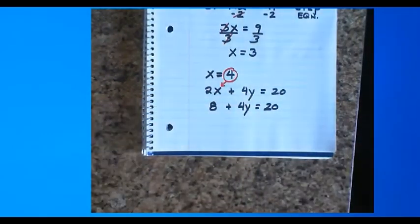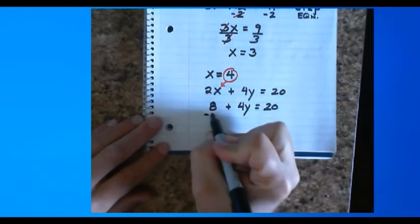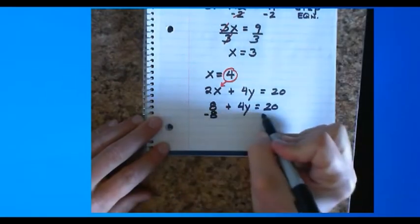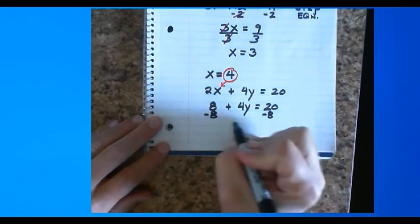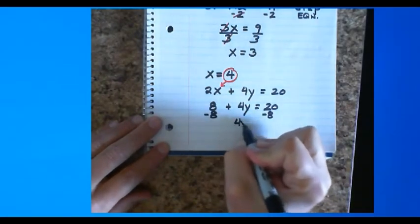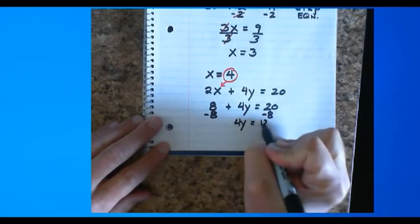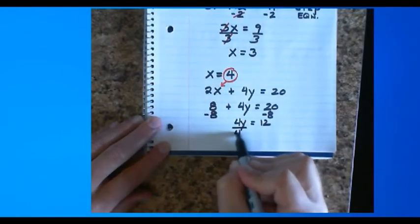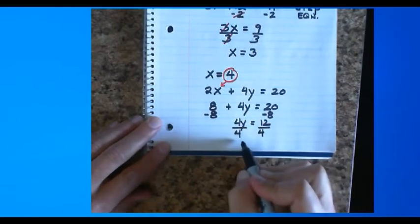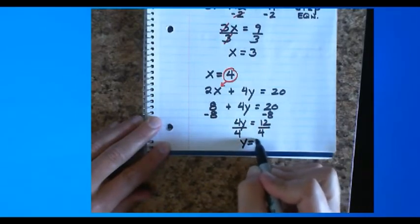And what I'm left with is a two-step equation. To solve this, I'm gonna subtract 8 from both sides. That'll give me 4y equals 12. And I'll divide both sides by 4. That's gonna give me y equals 3.